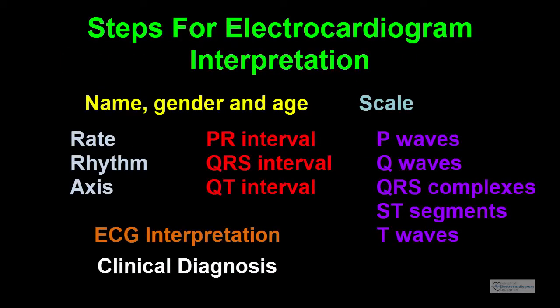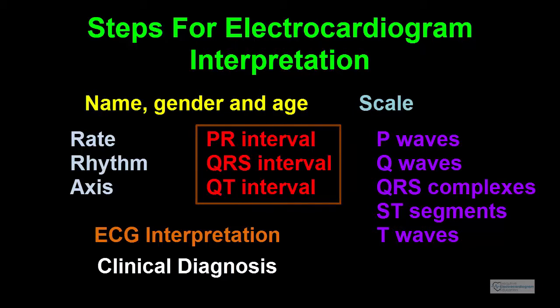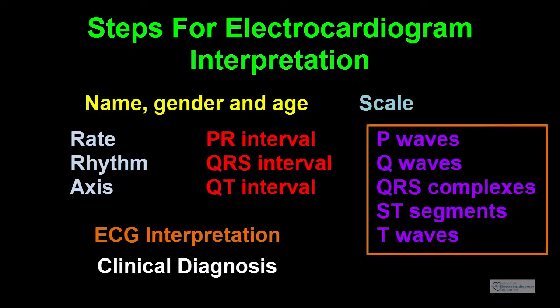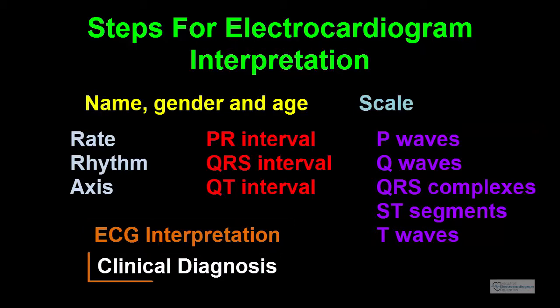These are the following steps: Check the patient's name, gender, and age if available. Check the scale to see the sweep speed and the voltage calibration. Next: rate, rhythm, axis, PR interval, QRS interval, QT interval, P waves, Q waves, QRS complexes, ST segments, and T waves. Then you make your electrocardiographic interpretation and, if possible, a clinical diagnosis.